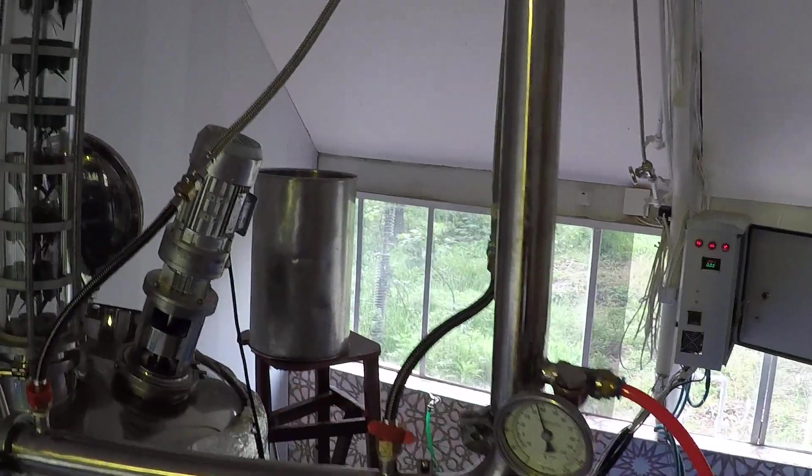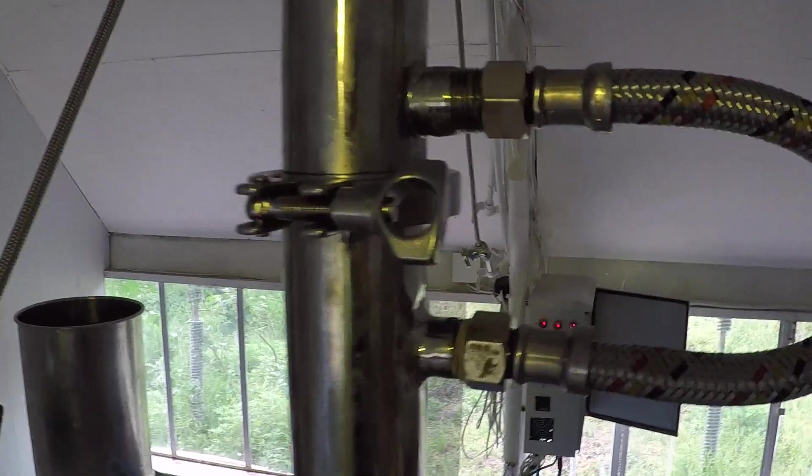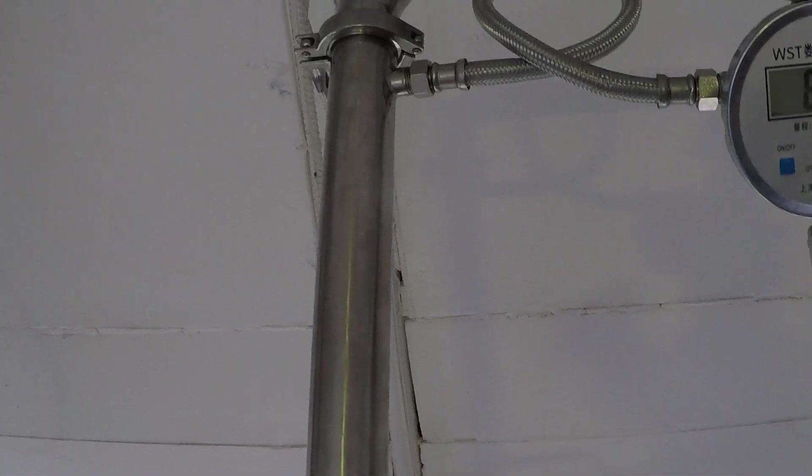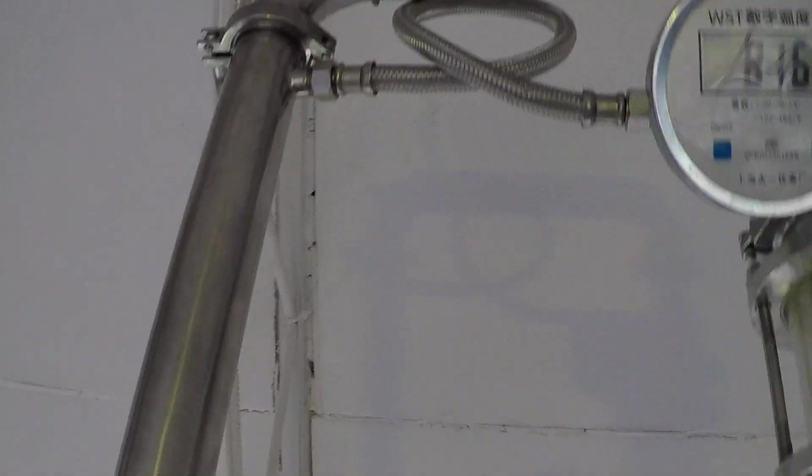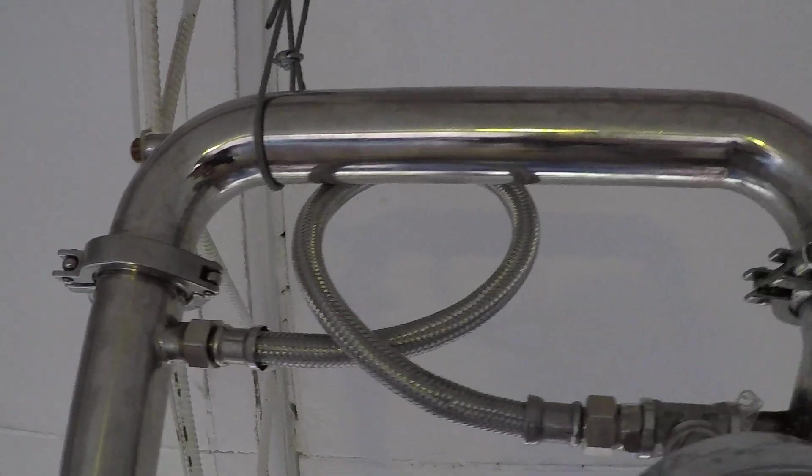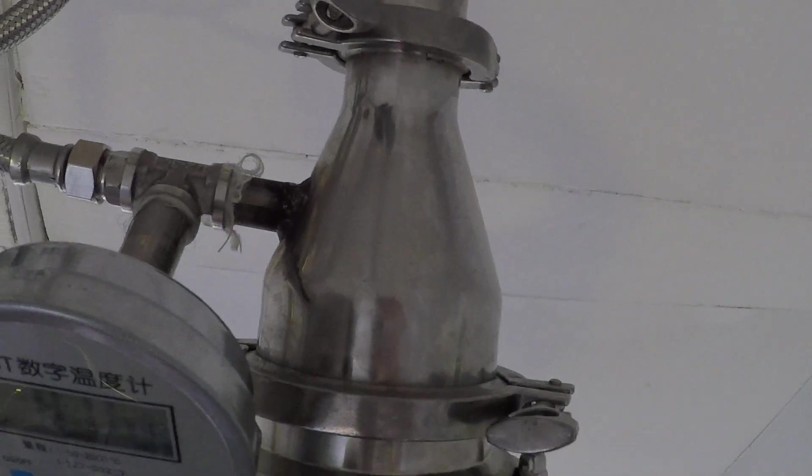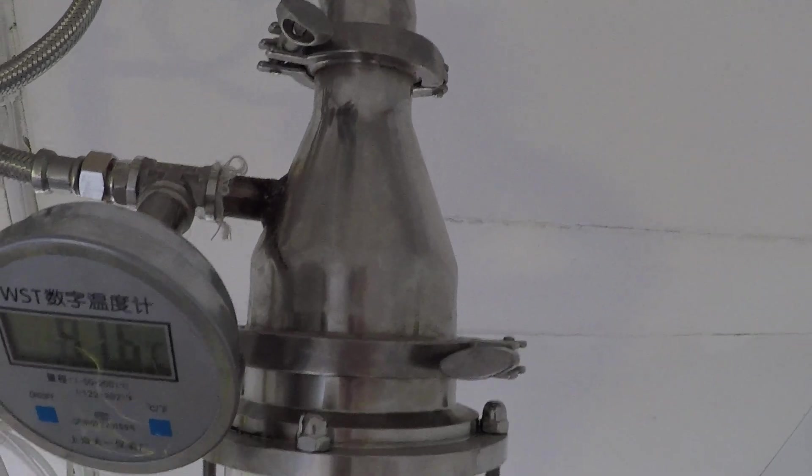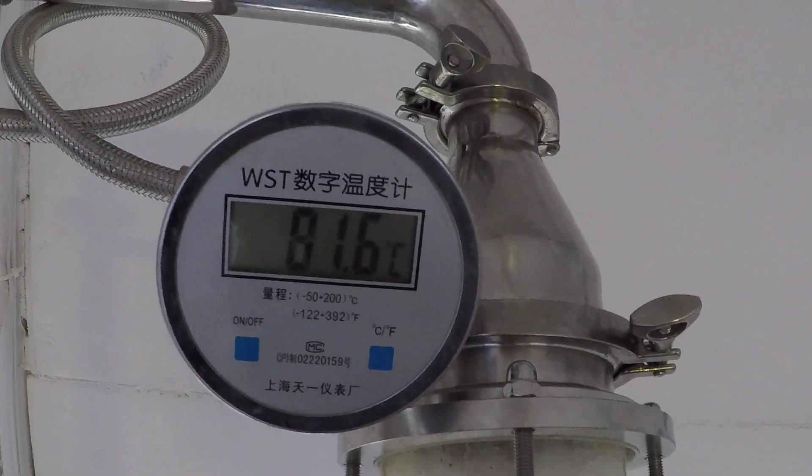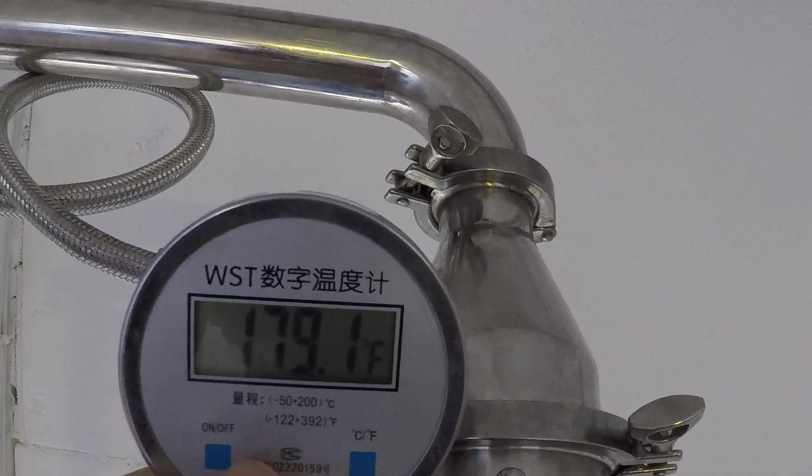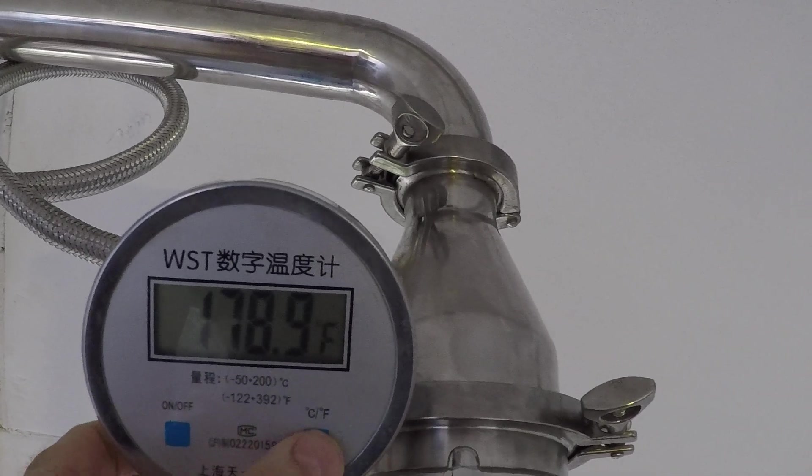After that, the wort passes through this condenser and heater. Going this way, we are putting it at the top of the tower where it has already reached a temperature up to 179 Fahrenheit.